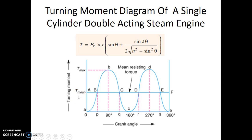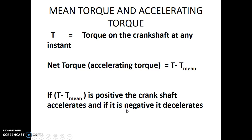The mean torque also has another significance — it represents the mean resisting torque on the rotating crankshaft. As the crankshaft rotates, it is resisted by the frictional force in the bearing, creating a torque that retards or resists the rotation. The net torque acting on the crankshaft is the difference between the applied torque T and the mean resisting torque. If this net value is positive, the crankshaft will accelerate and the angular velocity will keep increasing.